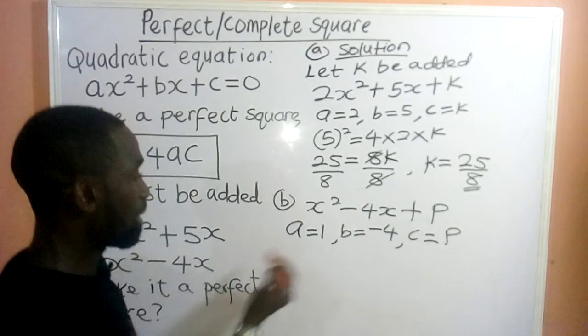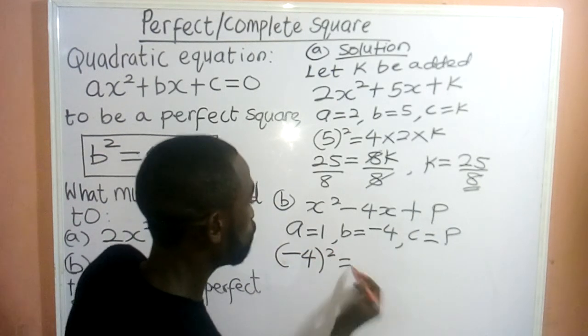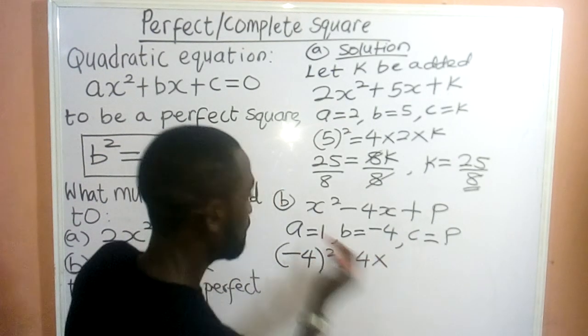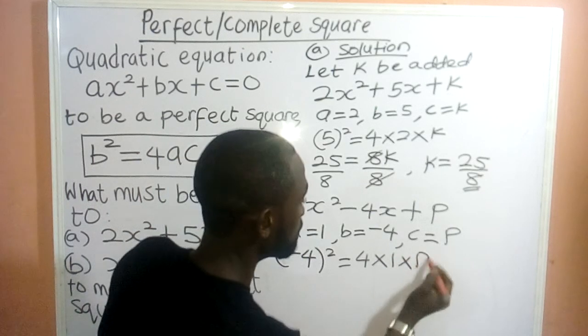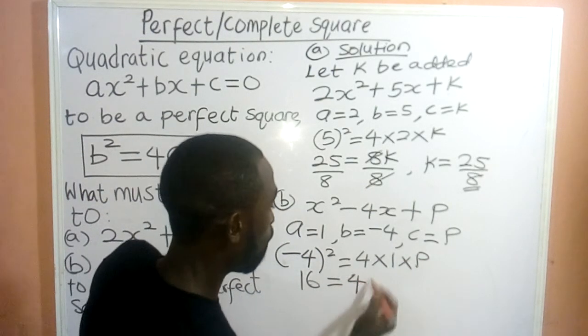So, we apply the formula. B². So, we have -4 squared = 4 × a, 1, × c, P. So, here, we have 16 = 4P.